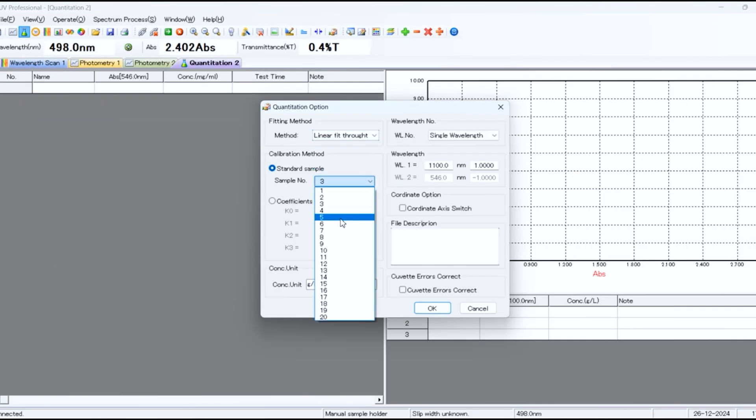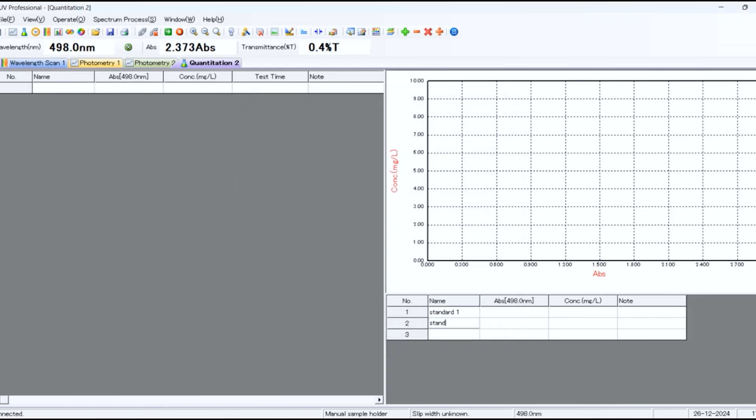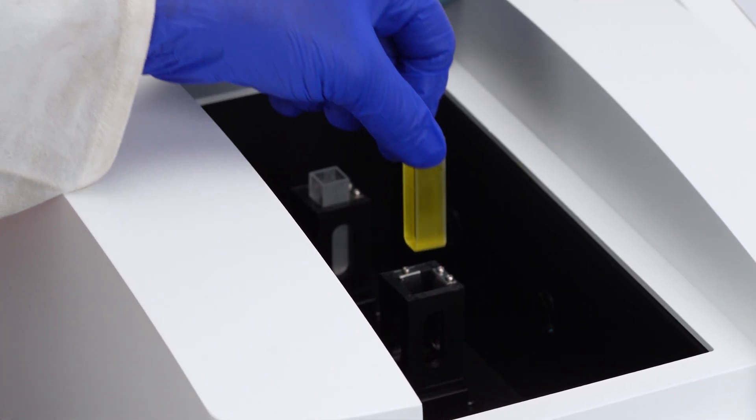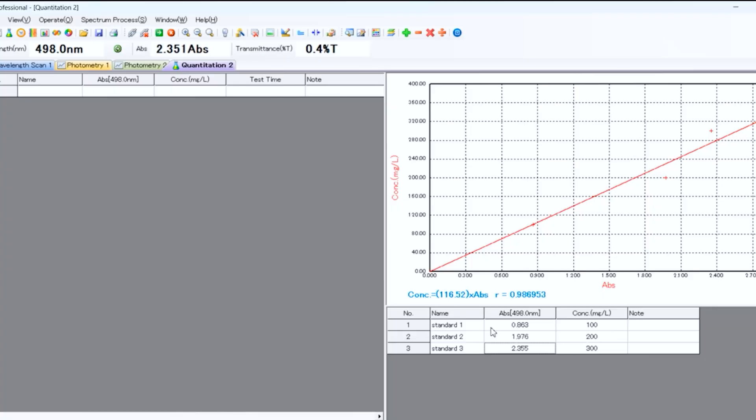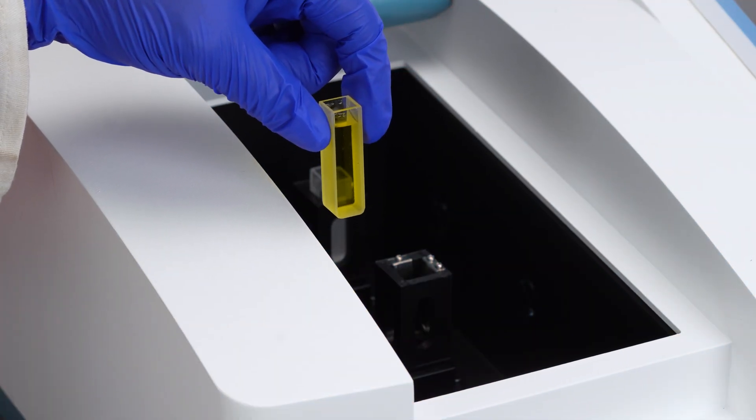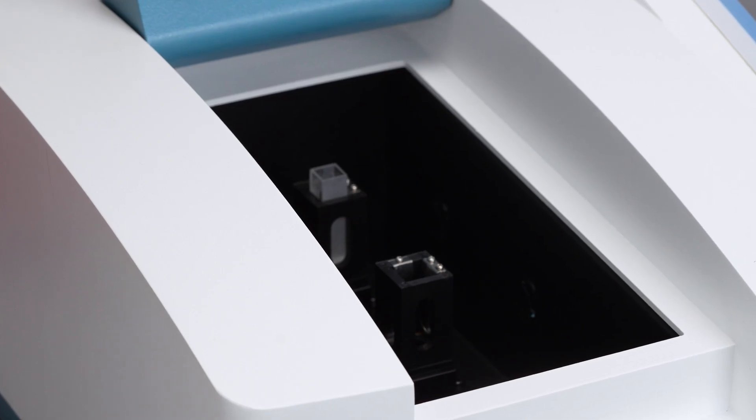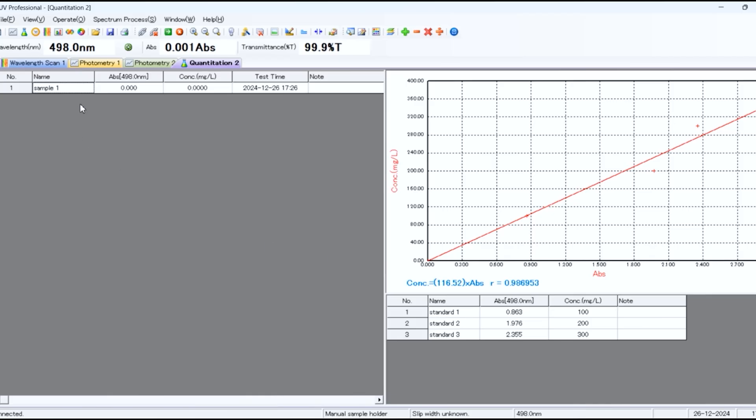Input parameters like fitting method, number of samples, concentration unit and wavelength. Enter standard concentrations on the right side of the screen. Blank the system and measure each standard sample. Once all standards are measured, the standard curve will be plotted. To measure unknown samples, blank the system again, insert the unknown sample and click start test.